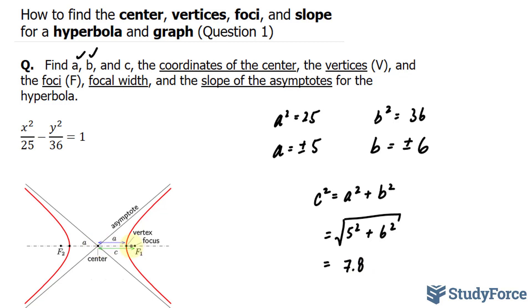So roughly 7.8 represents the distance from the center to the focus. From this, we can find the coordinates of the foci. So we'll call this focus 1 and focus 2. Focus 1 will have the coordinates 7.8 and 0. And focus 2 will have the coordinates negative 7.8 and 0. So we found the foci. We found c.